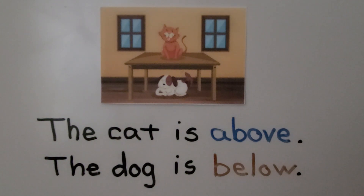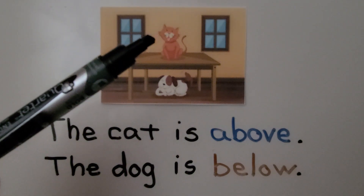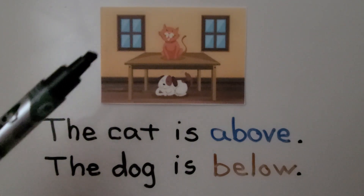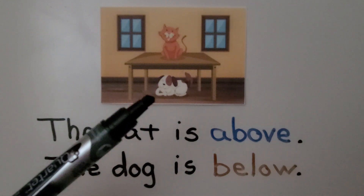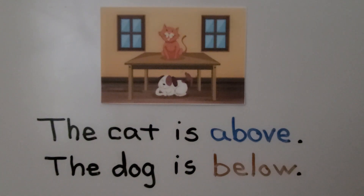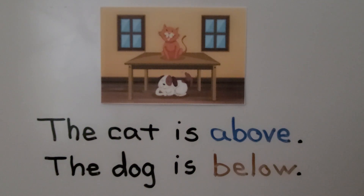Look at this picture. The cat is above and the dog is below. The cat is above the dog — the cat is higher than the dog. And the dog is below the cat — the dog is lower than the cat.